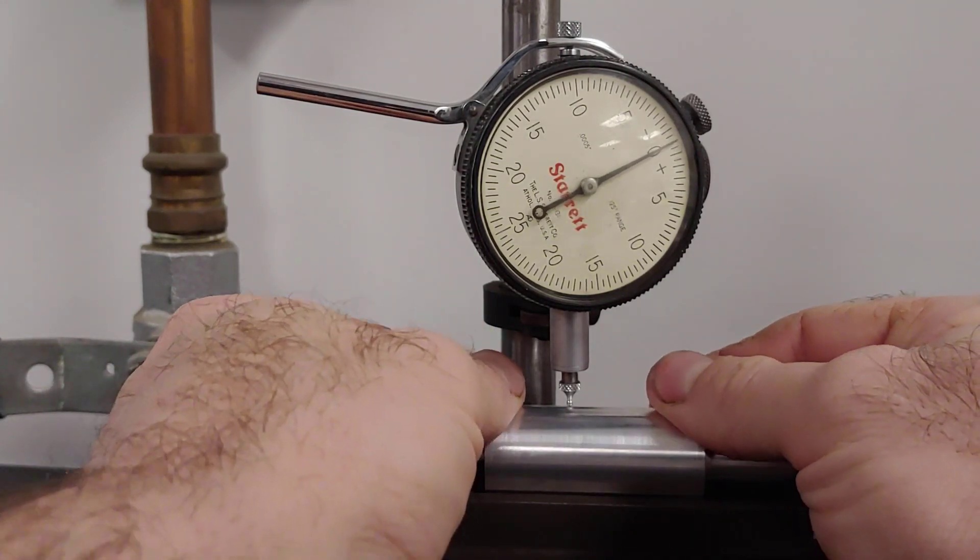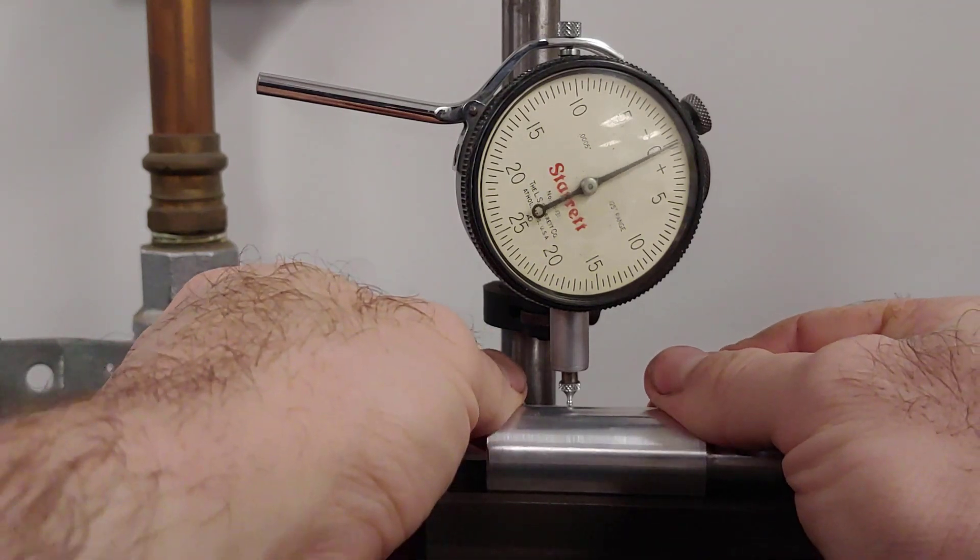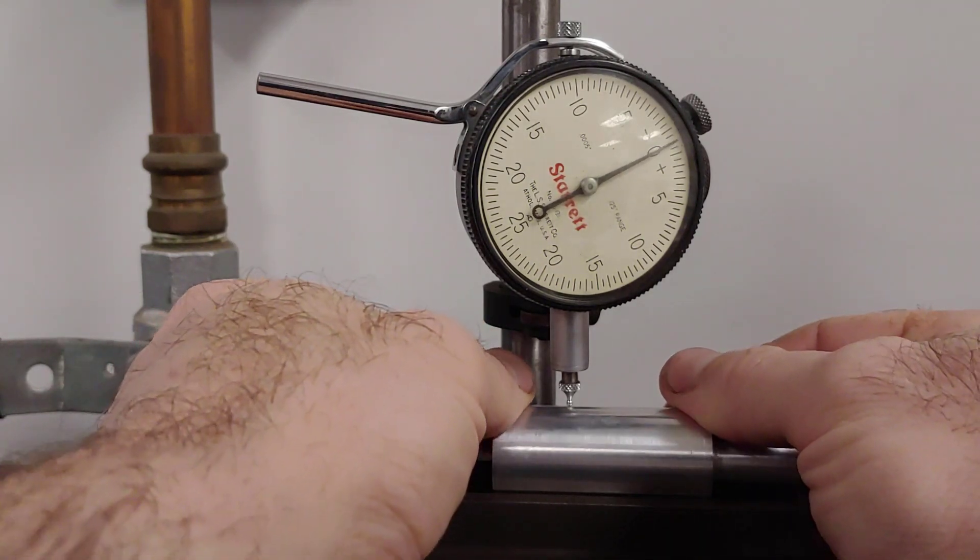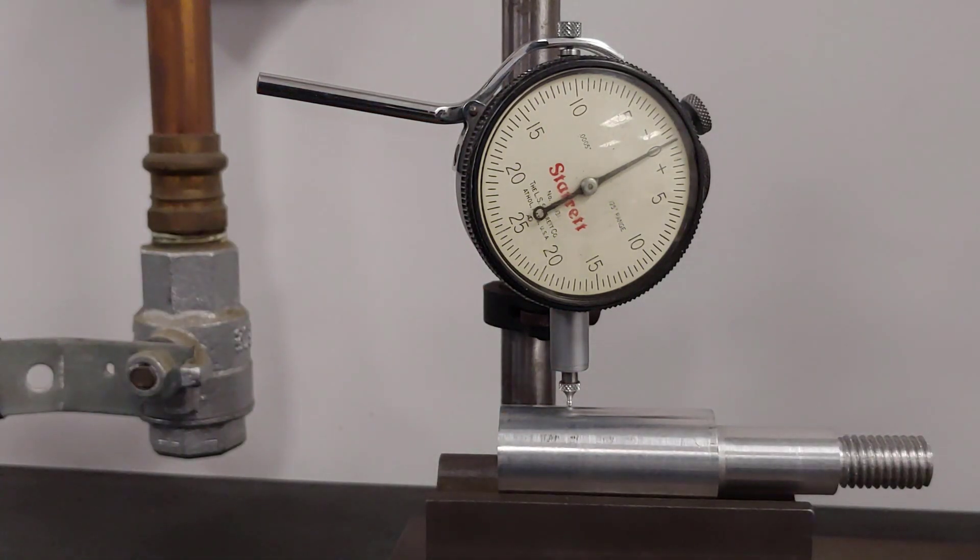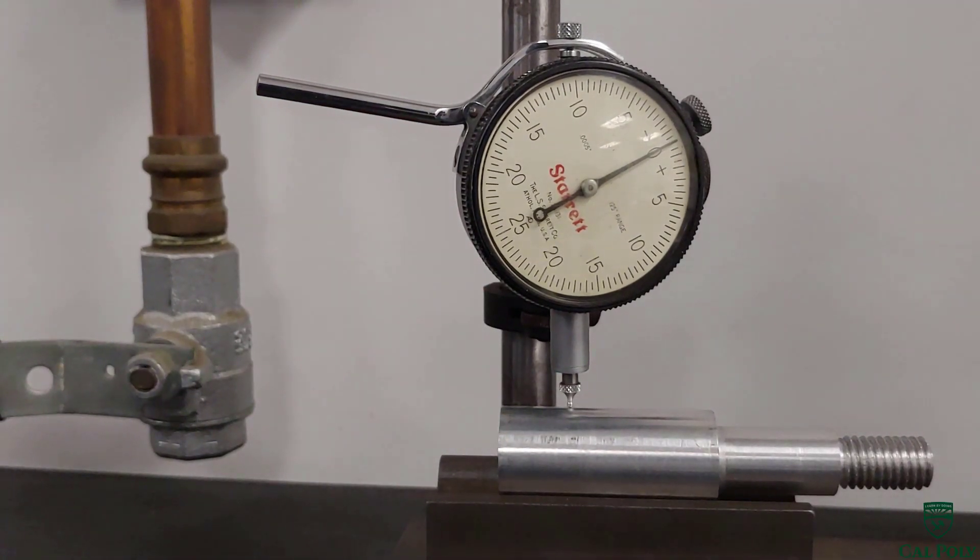We can see that there is some quick momentary movement of the needle. This is likely due to some surface imperfections. Our part passes because the needle only moves a total of one thousandth of an inch.